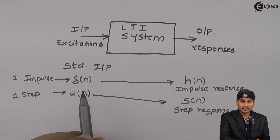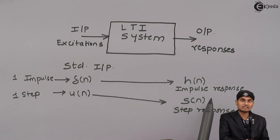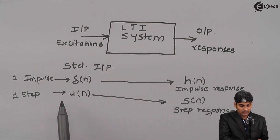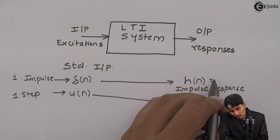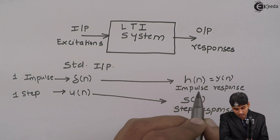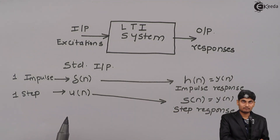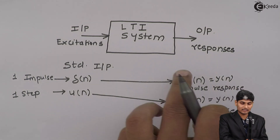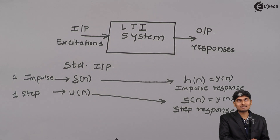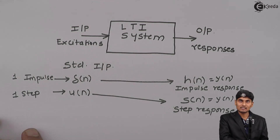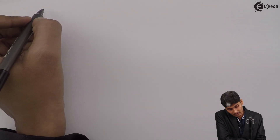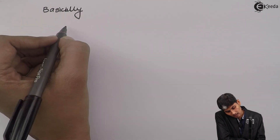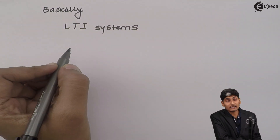So when I give input as delta(n), the output is the impulse response h(n), and when the input is u(n), the output is s(n), the step response. Normally the output is denoted as y(n), so y(n) = h(n) for impulse input and y(n) = s(n) for step input. The set of inputs x(n) and set of outputs y(n) characterize and represent the system. Basically, LTI systems are represented using difference equations.